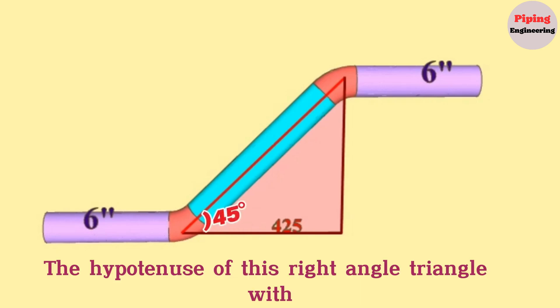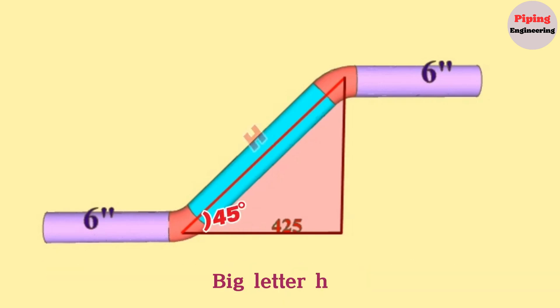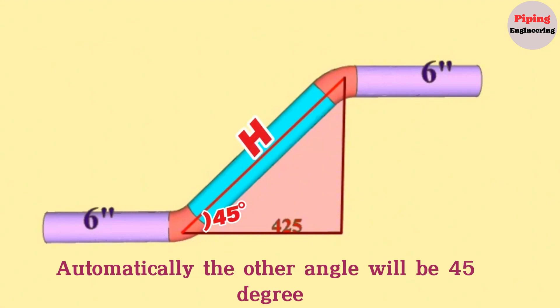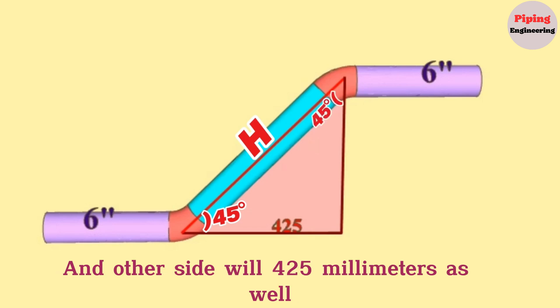Let's mark the hypotenuse of this right angle triangle with big letter H. Since one of the angles of this right triangle is 45 degrees, automatically the other angle will be 45 degrees and the other side will be 425 millimeters as well.